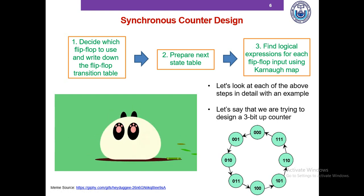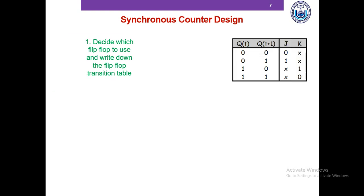The first step of designing a 3-bit up counter is to decide which flip-flop to use. Here we're trying to design the circuit using a JK flip-flop, and then we write down the flip-flop transition table as shown here.